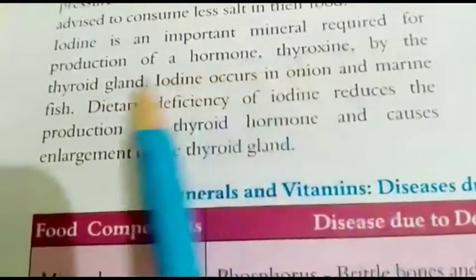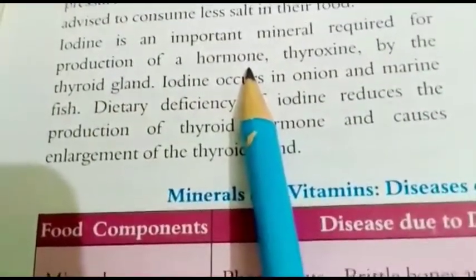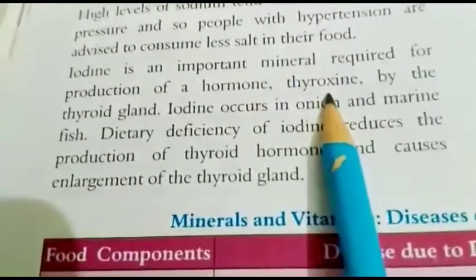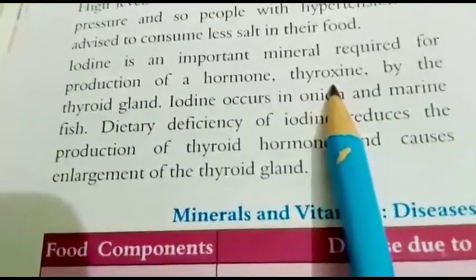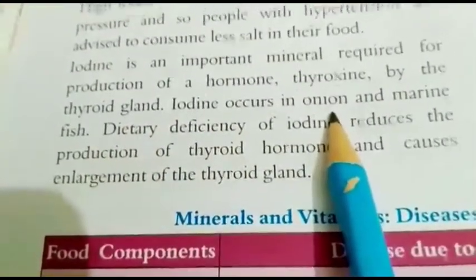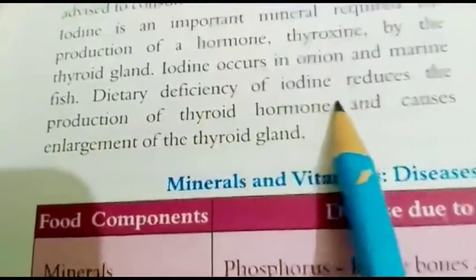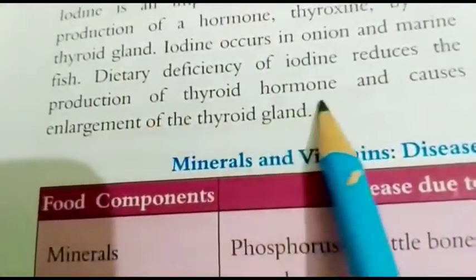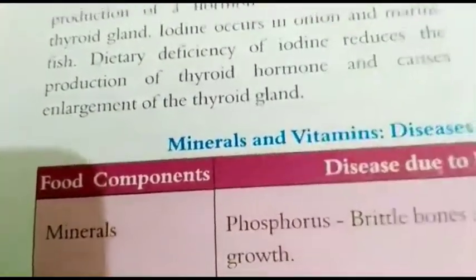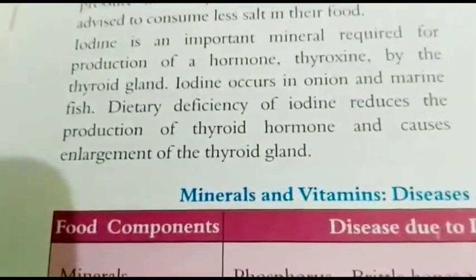Iodine is an important mineral required for the production of the hormone thyroxine by the thyroid gland. Iodine occurs in onion and marine fish. Dietary deficiency of iodine reduces the production of thyroid hormone and causes enlargement of the thyroid gland.